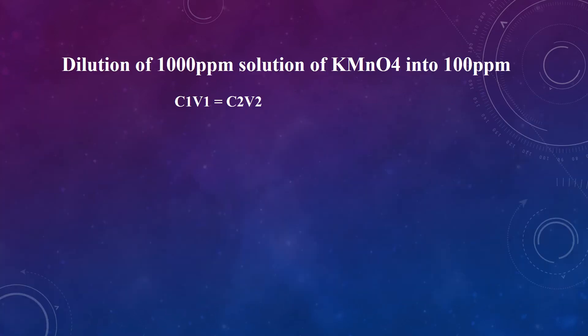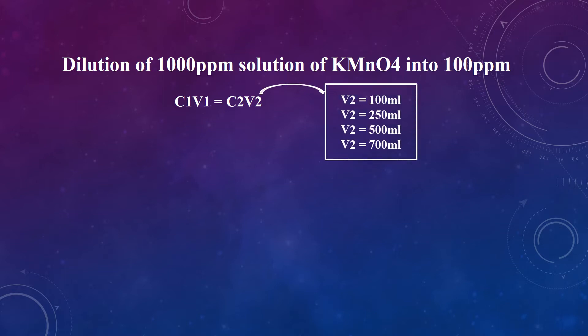Let's understand this by diluting a 1000 ppm solution of potassium permanganate. If we want to prepare a 100 ppm solution from a 1000 ppm solution of potassium permanganate, put C1 = 1000, as the concentration of the stock solution is 1000 ppm. Leave V1 as unknown. Put C2 = 100, as it is the concentration of the solution we want to prepare.